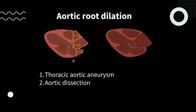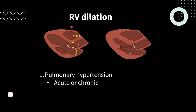An abnormal heart with a violation of the rule of thirds from the aortic root is commonly caused by thoracic aortic aneurysms, or in the emergency department, we are always concerned for aortic dissections. A violation from the right ventricle — where the RV is noticeably larger — is usually caused by pulmonary hypertension, either acute or chronic. We can discuss how to determine the difference, but you'll want to look at separate views for other signs of pulmonary hypertension.